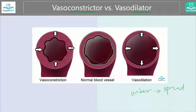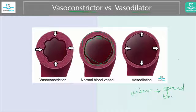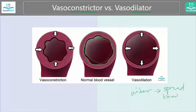The second problem with a wider, vasodilated blood vessel is that there is more blood coming out of the area. If you are doing a scaling and root planing, a prophy, or especially perio surgery, you don't want the blood coming out — you want it to be as dry as possible.